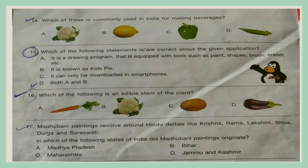Question 17. Madhubani paintings revolve around Hindu deities like Krishna, Rama, Lakshmi, Shiva, Durga, and Saraswati. In which of the following states of India did Madhubani paintings originate? A. Madhya Pradesh, B. Bihar, C. Maharashtra, D. Jammu and Kashmir.